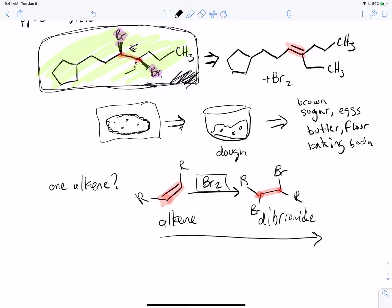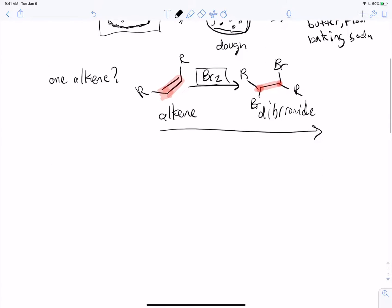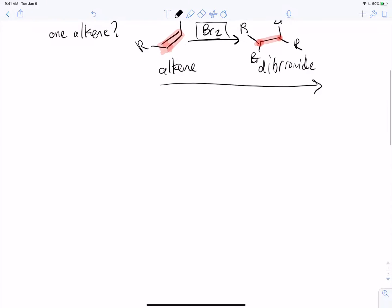That's kind of what retrosynthetic analysis is — it's saying, how did I end up here? It's like I don't have instructions for how to build this thing, so I'm trying to infer how to build it just from looking at it. Just like with the chocolate chip cookie, I can look at it and say, well, it has chocolate chips — so I must have started with chocolate chips somewhere in there. We're doing exactly the same thing in our example: it's got bromines in it, so it must have used Br2 to get there. That's the logic we're trying to use here. That's what retrosynthetic analysis is.